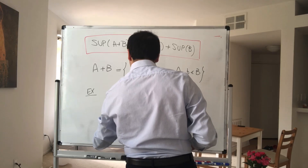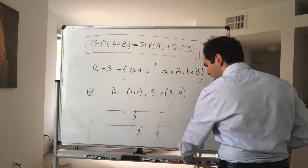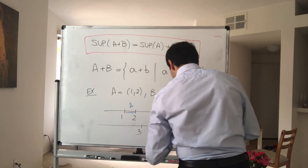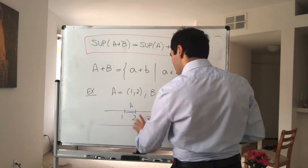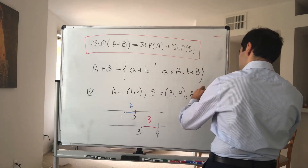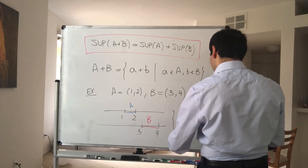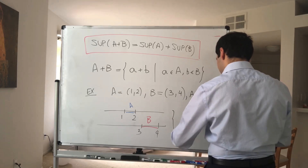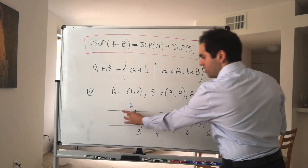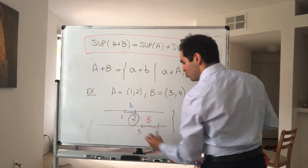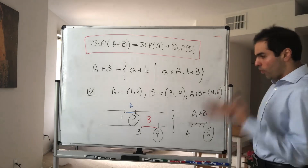So this is [1, 2] and this is [3, 4]. If you add all the elements in A with all the elements in B, you should just get the interval [4, 6]. In other words, if you shift this interval by [1, 2], you get [4, 6]. And notice there's a beautiful relationship: if you add the supremum of A with the supremum of B, you actually get the supremum of A plus B. It turns out that's always true.